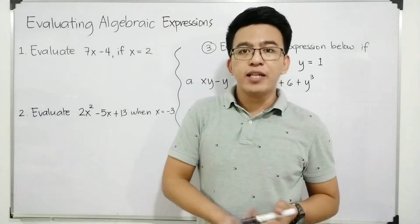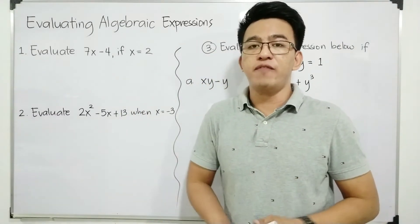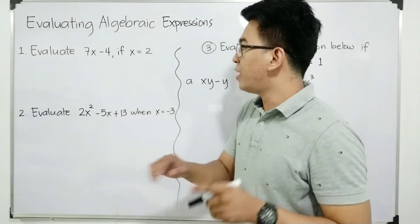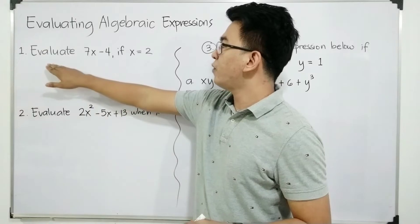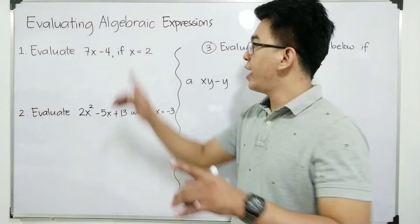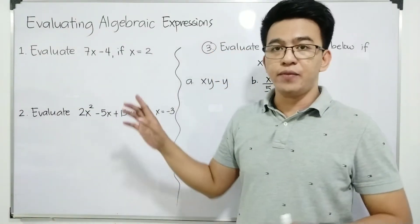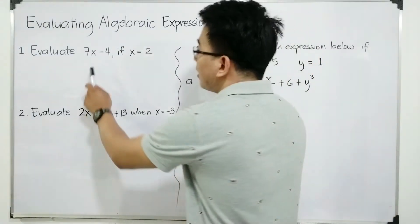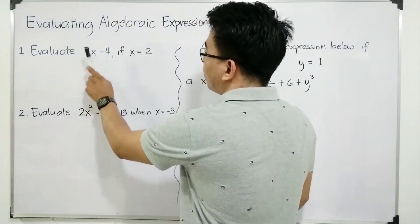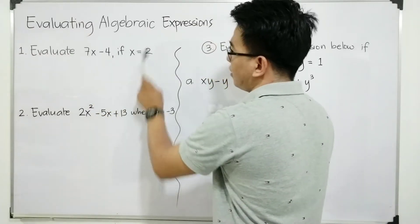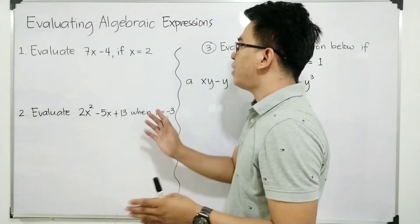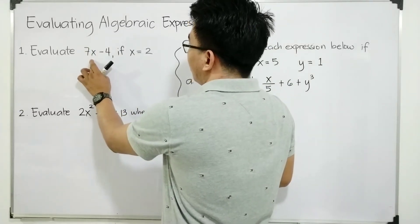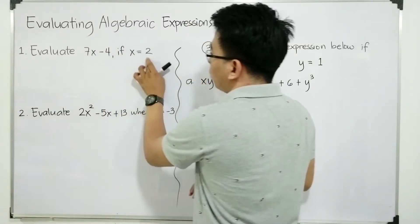So the question here is: how are we going to evaluate a given algebraic expression? Let me give you the example — evaluate 7x minus 4 if x is equal to 2. What you need to do here, given this expression, we have the variable x and we have x is equal to 2. So the simple step here is to substitute or to replace this variable x by 2.